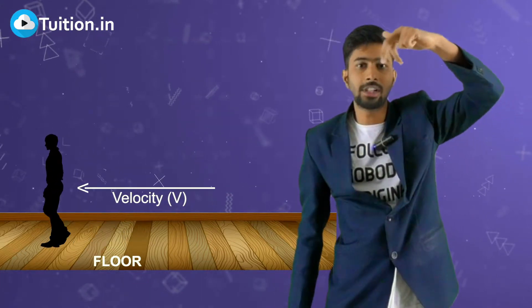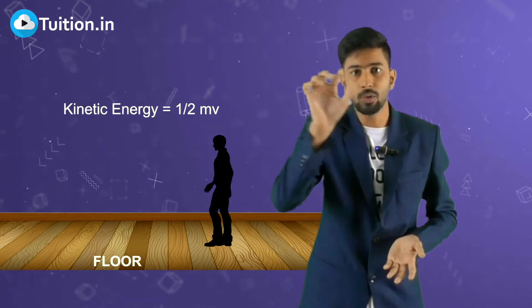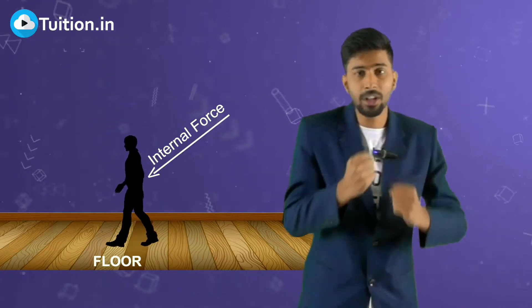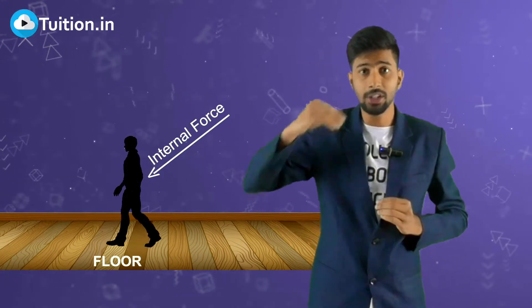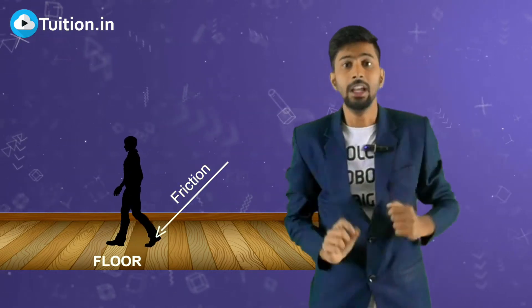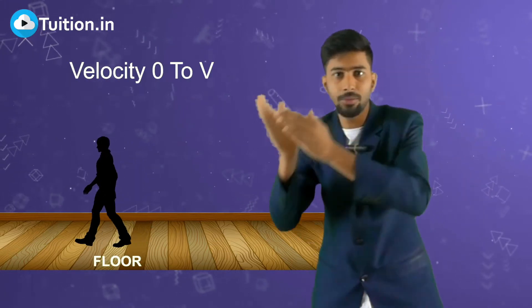If you started from zero velocity and attained some constant velocity v, you had an increase of kinetic energy of (1/2)mv². Where did this kinetic energy come from? It came from your internal forces — your muscular forces. Friction is not providing you this kinetic energy, because the point at which friction acts doesn't get displaced. If the point at which a force acts doesn't get displaced, that force does no work. So friction does not do work to increase your kinetic energy.